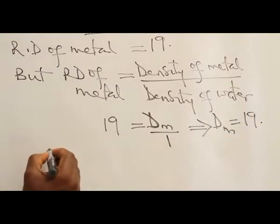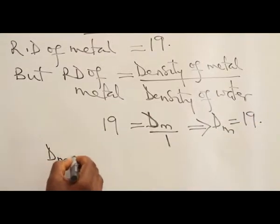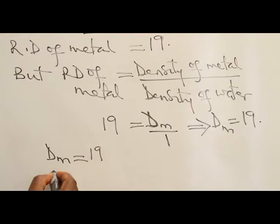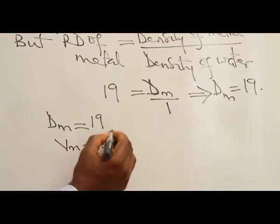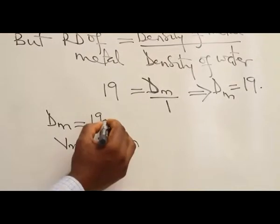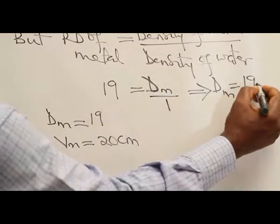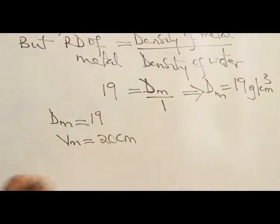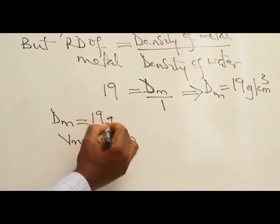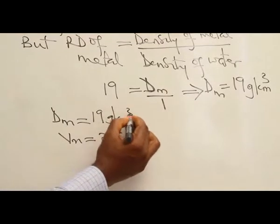Now we know the density of the metal is 19 grams per centimeter cubed, and we also know the volume of the metal is 20 centimeters cubed.